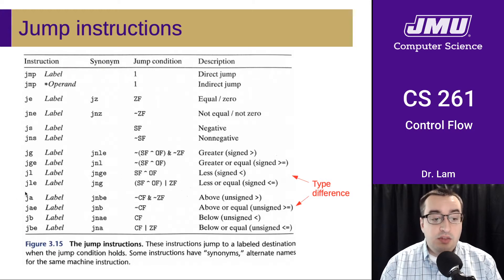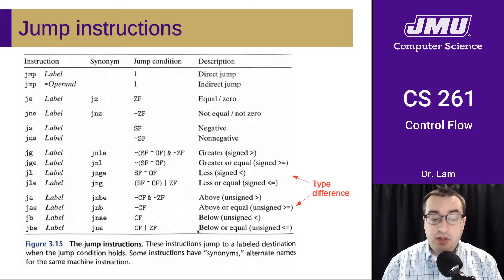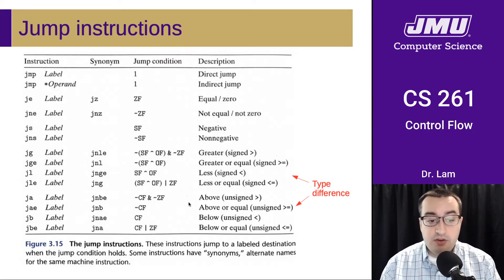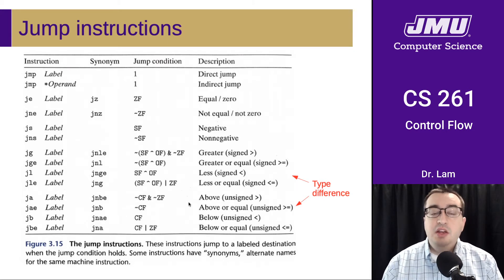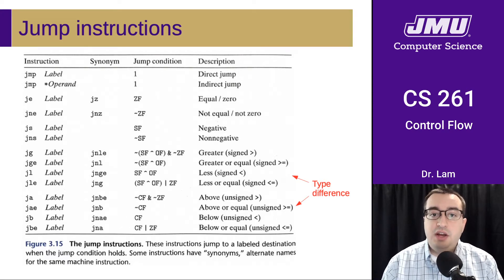One other thing to note is that the greater-than and less-than instructions are very similar to the above-and-below instructions. But because of the flags that are checked, the greater/less-than group deals with signed comparisons, while the above/below group deals with unsigned comparisons. Information is bits plus context — you're the one who knows whether you're working with signed or unsigned data, so you need to use the appropriate jump instruction. It's the same compare instruction; it sets all flags appropriately regardless of signedness, so it's up to you to do the correct conditional jump.